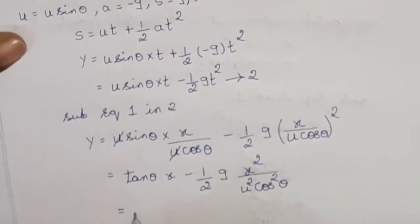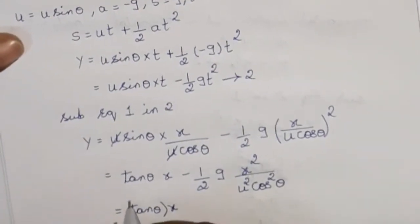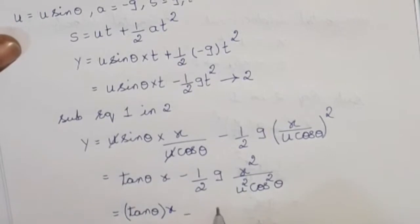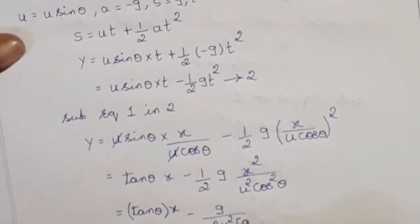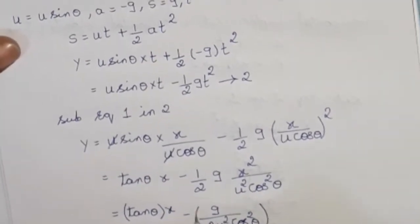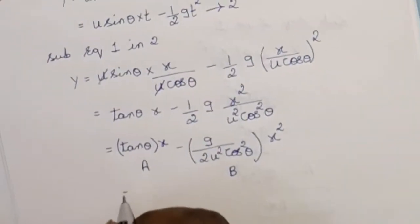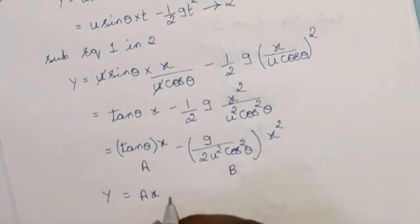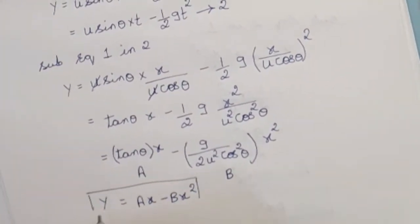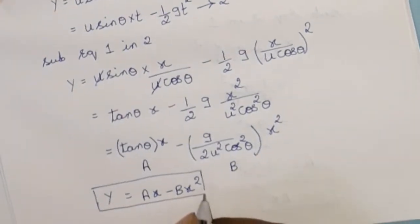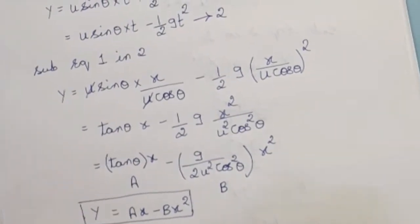So let a = tanθ and b = g/(2u²cos²θ). The equation becomes y = ax minus bx². This is nothing but the equation of a parabola in oblique projection. In oblique projection, the body moves in a parabolic path.